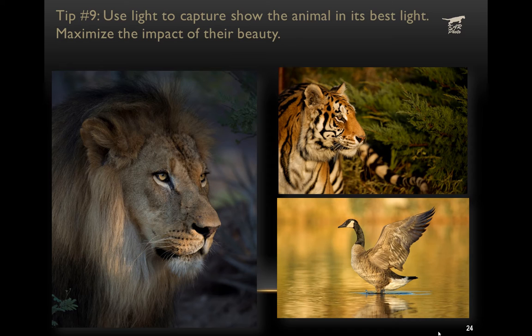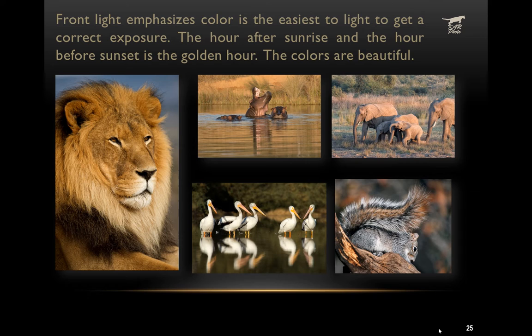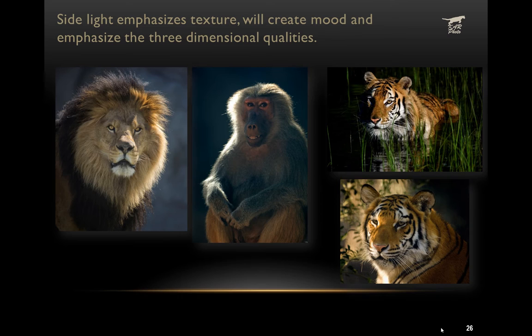The ninth tip is to use light to show the animal in their best light — the goal is always to honor wildlife and make them look as beautiful as possible. There are multiple kinds of directional light. Front light emphasizes color and is the easiest to expose for because the light comes onto the animal evenly across left to right and top to bottom. The best time to shoot, regardless of light type, is the hour after sunrise and the hour before sunset, when there's the least difference between highlights and shadows, making it easiest to get detail in both.